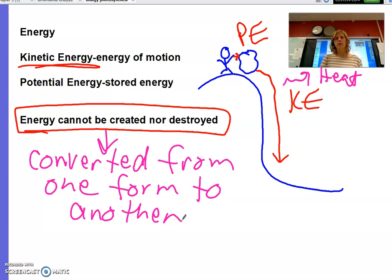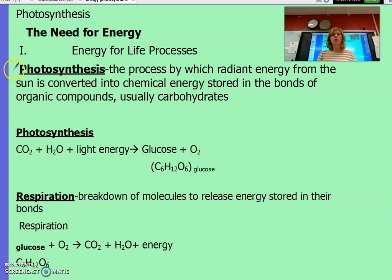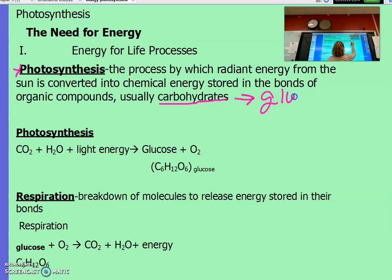Photosynthesis is all about capturing energy and converting it from one form to another. All living things on this planet need energy — that's one way we determine whether something is living. Photosynthesis is that process by which radiant energy from the sun is converted into chemical energy stored in the bonds of organic compounds — usually carbohydrates, and typically a molecule called glucose.